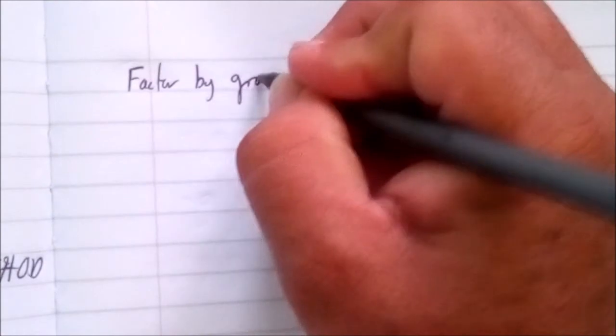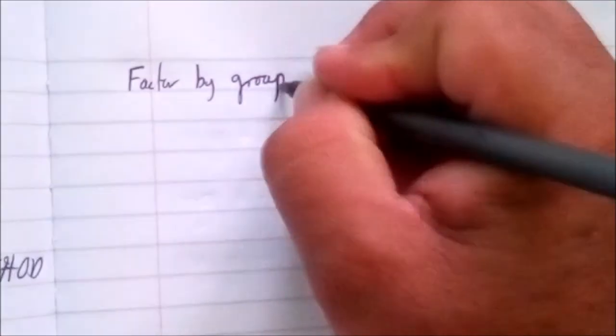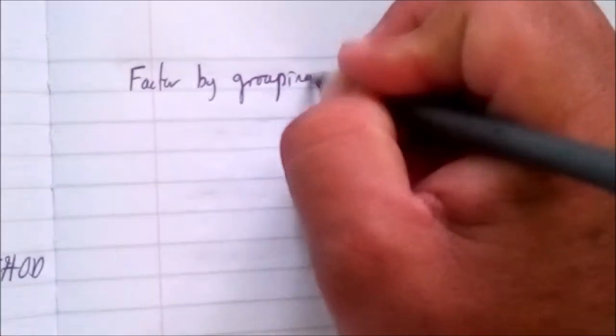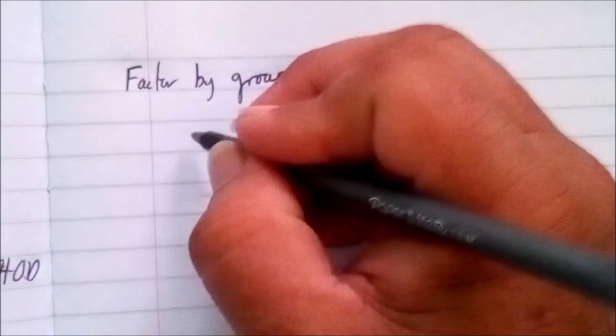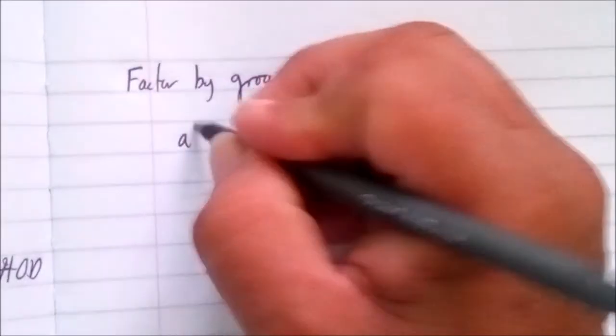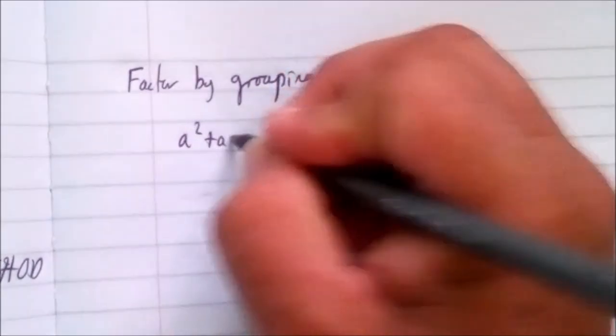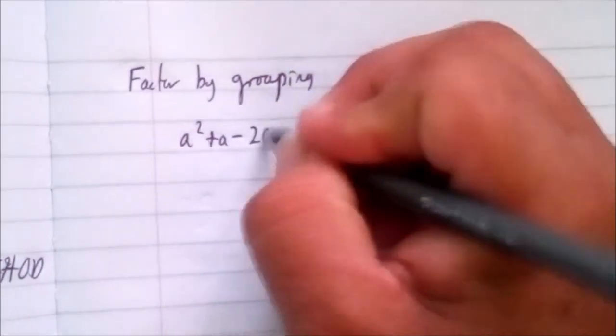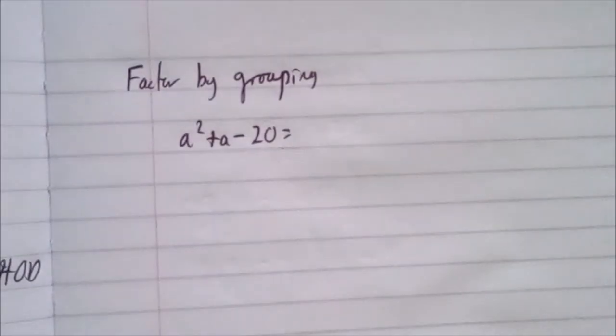Let's go with a few more examples. Suppose we have factor by grouping — factor by grouping means you will need to use this method specifically. You cannot use any other method; otherwise you will not get your points.